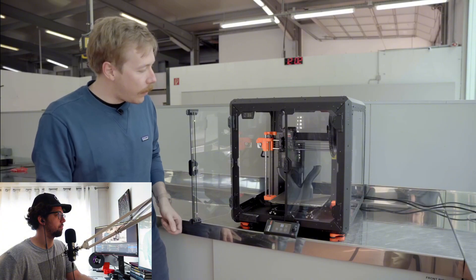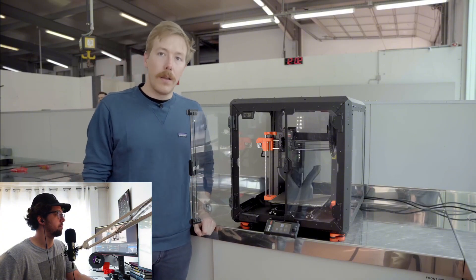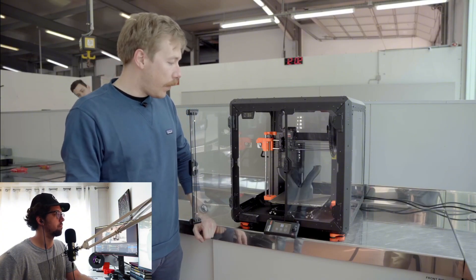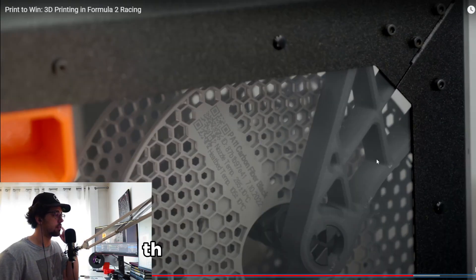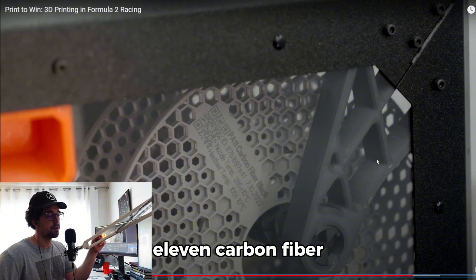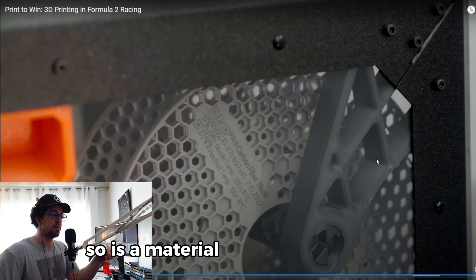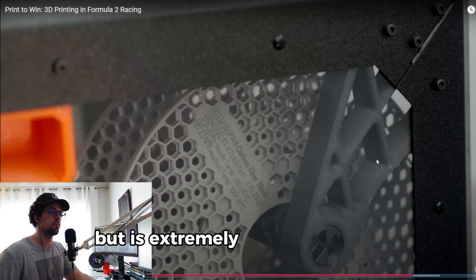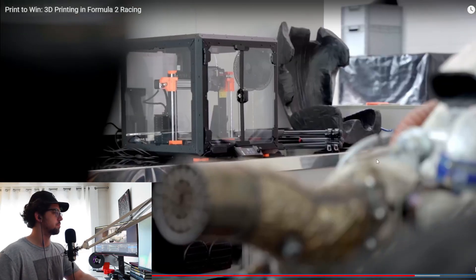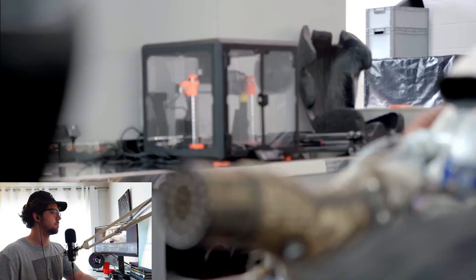This is our enclosure, we use it mainly to print all our technical material like the PC carbon fiber and we need the enclosure to avoid the wind draft. It's nylon PA11 carbon fiber so it's a material very tough to print. It tends to warp but it's extremely resistant.